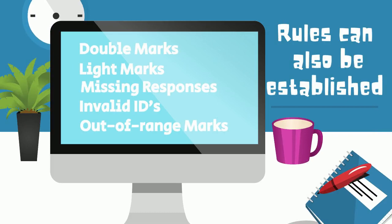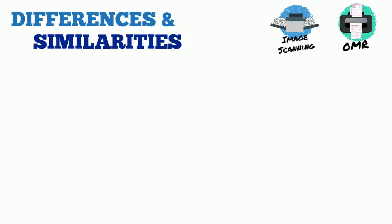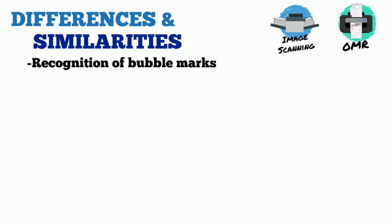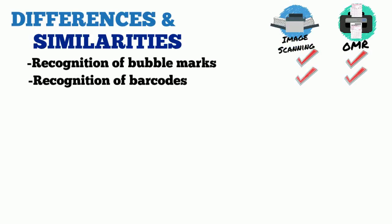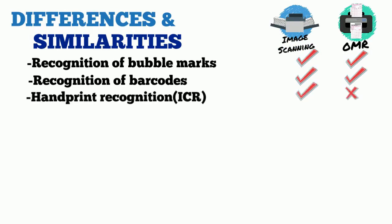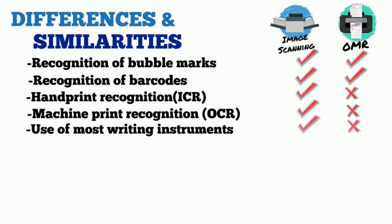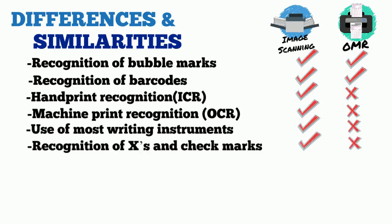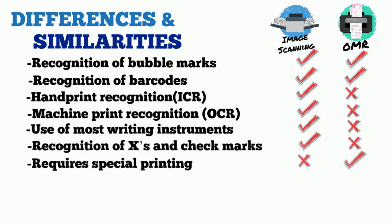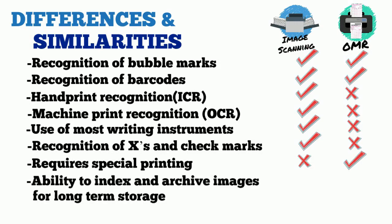Here is a quick reference chart of the differences and similarities between the two technologies, covering: recognition of bubble marks, recognition of barcodes, handprint recognition, machine print recognition, use of most writing instruments, recognition of X's and check marks, requirements for special printing, ability to index and archive images for long-term storage, and accuracy.